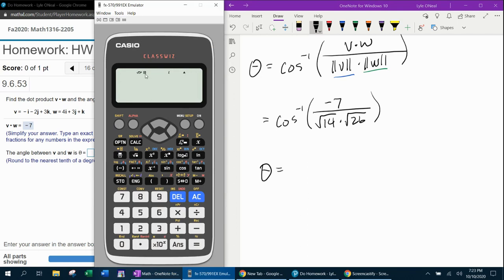So here we go. So in degree mode, inverse cosine of negative 7 over the square root of 14. Don't forget to move out from under the square root times the square root of 26. Out, out, close it. And that angle is obtuse. Now, where do I need to round that? To the nearest tenth of a degree. So that will be 111.5 degrees. Should be the angle between the two vectors.